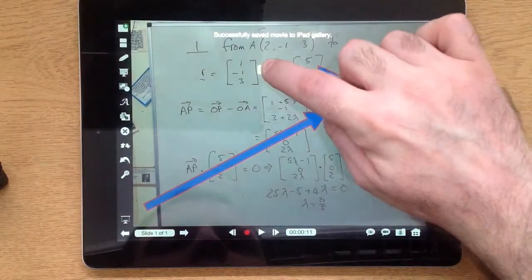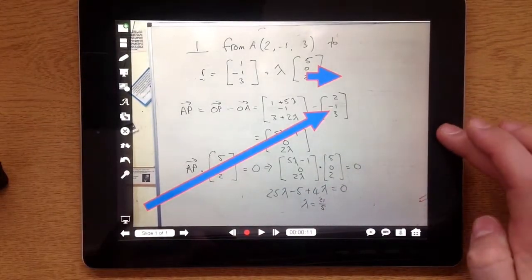Then we get the OK button. There we go. Now if I quit the Explain Everything app now,